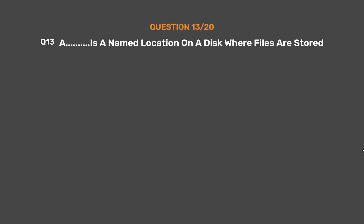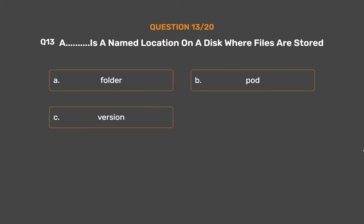Question number 13. A blank is a named location on a disk where files are stored. Option A: Folder. Option B: Pod. Option C: Version. Option D: None of the above.